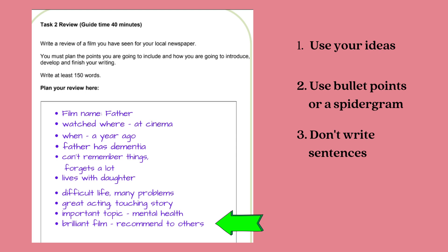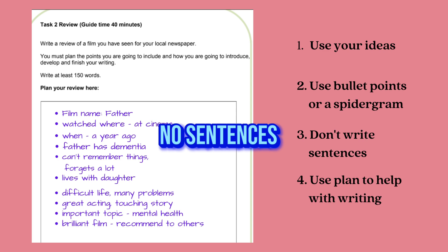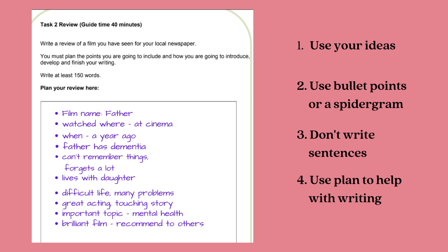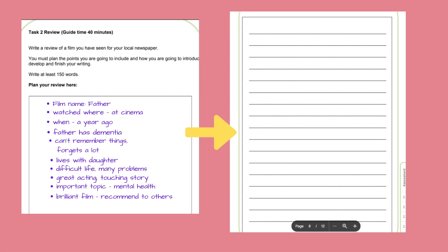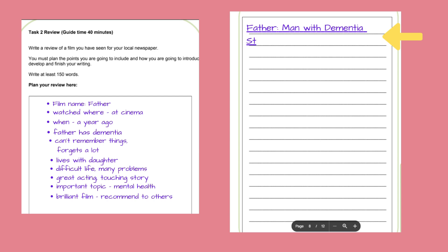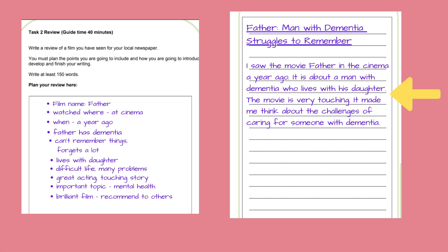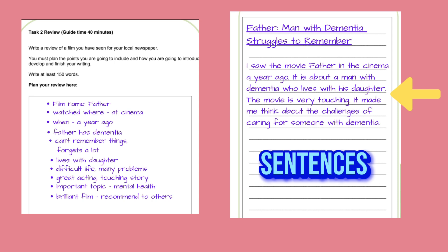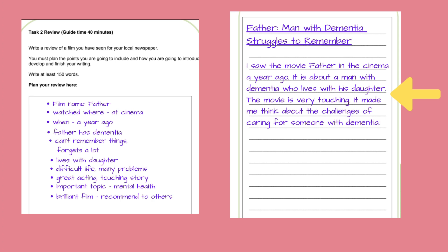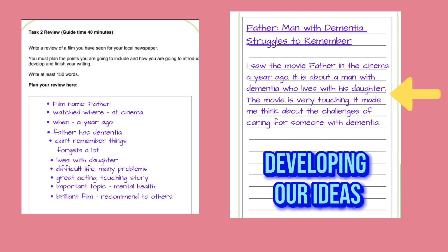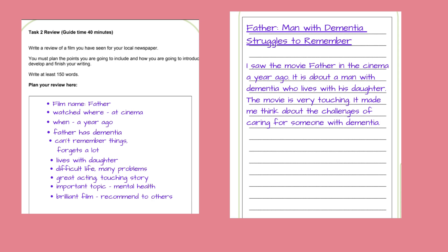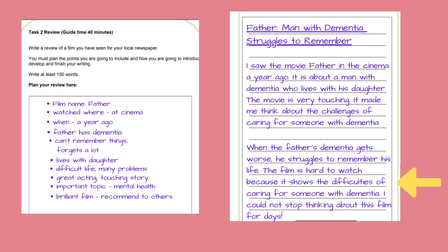You will now use this plan to help you write your review. Start with a suitable title: 'Father: Man with dementia struggles to remember'. Then the first paragraph: 'I saw the movie Father in the cinema a year ago. It is about a man with dementia who lives with his daughter.' Two simple short sentences — make things easy in the beginning. Then: 'The movie is very touching. It made me think about the challenges of caring for someone with dementia.' A very straightforward, easy-to-understand first paragraph. Now we can start developing our ideas in the second paragraph — remember, our plan is helping us write these sentences.